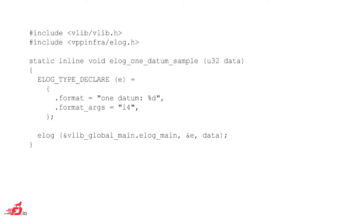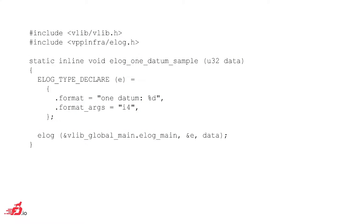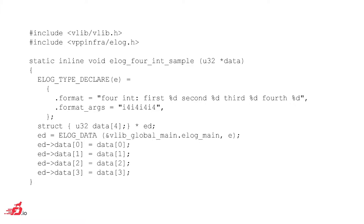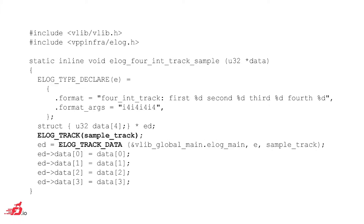Here's doing four integers. The interesting difference is: one datum versus i4 — the format args basically tell the offline pretty printer here's a format string and here's how much data to fish out of the variable portion of the event. To log four ints, you just say four %d's and i4, i4, i4, i4. You call the ELOG_DATA macro to grab yourself an event. ED is the type that you've described to the event logger for offline printing, and you splat down the data.